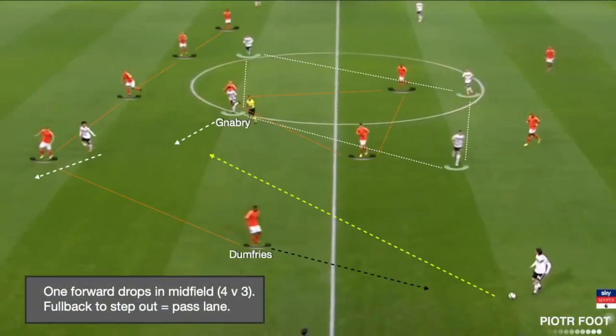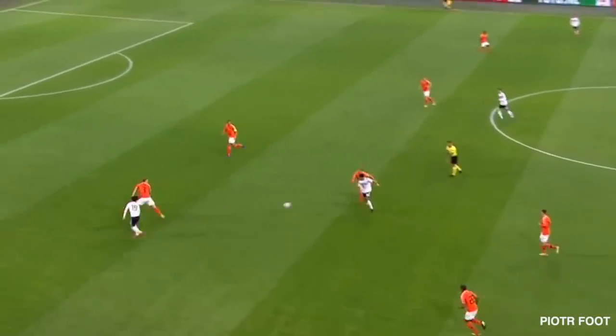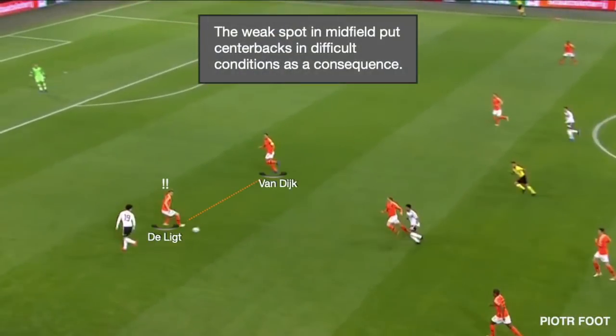A German forward would always drop into midfield to create a 4v3 situation. Here, Gnabry is in the zone of De Jong, which meant numerical superiority for Germany. So with the midfielders pressing high and a full-back stepping out, there would always be a very interesting pass lane from the wing. As a consequence of this weak spot in midfield, centre-backs would be in difficult conditions.